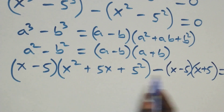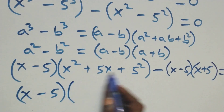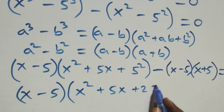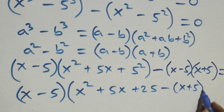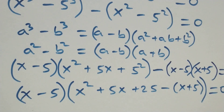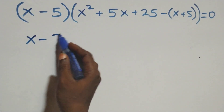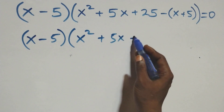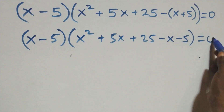Here we have x minus 5 as a common factor. We factor it out and this becomes x minus 5 times open bracket x square plus 5x plus 25 minus into bracket x plus 5, close brackets, equals to 0. We are left with x square plus 5x plus 25 minus x minus 5 inside the bracket, equals to 0.